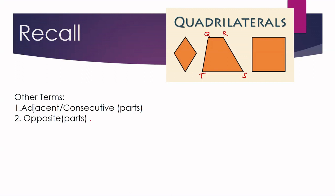If consecutive parts are called adjacent parts, the non-consecutive parts on the other hand are called opposite parts. The opposite sides of quadrilateral QRST are: segment QR and segment TS are opposite sides because they are non-consecutive. The other pair is segment QT and segment RS. So for opposite parts, there are only two pairs — unlike adjacent parts which have four pairs.